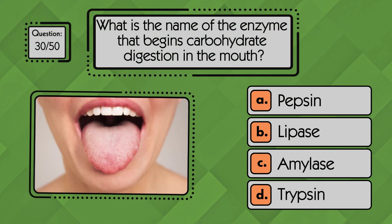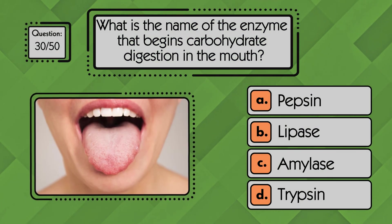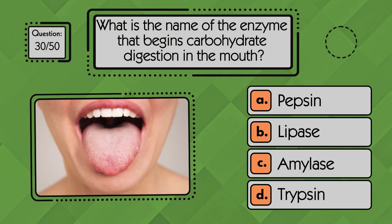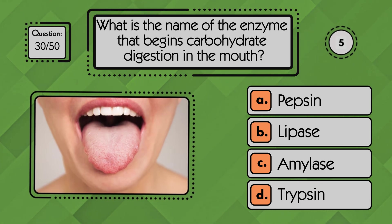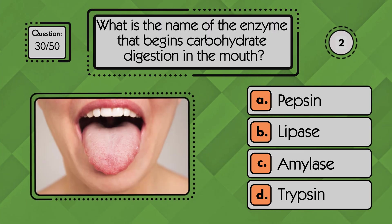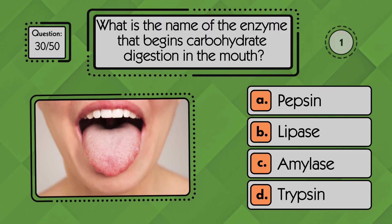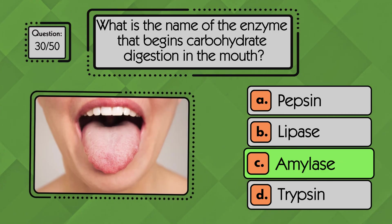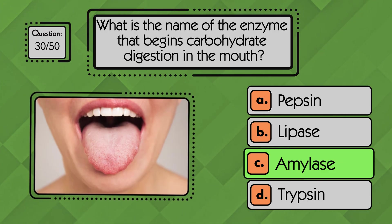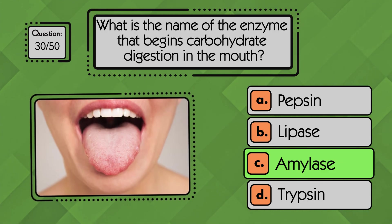What is the name of the enzyme that begins carbohydrate digestion in the mouth? Amylase is the enzyme in saliva that starts breaking down carbohydrates as soon as food enters the mouth.